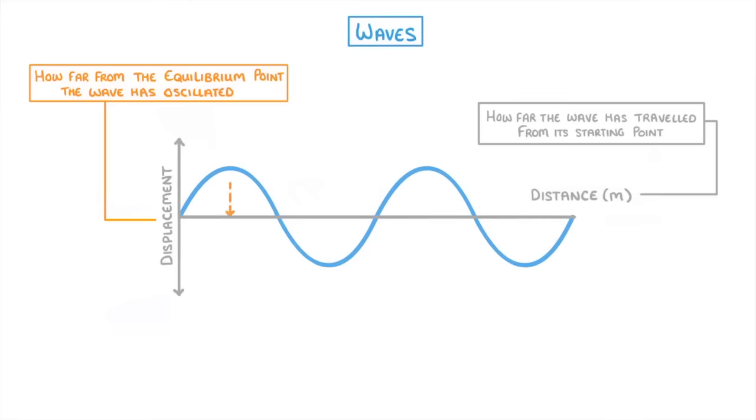The maximum displacement is known as the amplitude, while the distance of one entire oscillation is called the wavelength. So that could be from equilibrium, up, down and back up.